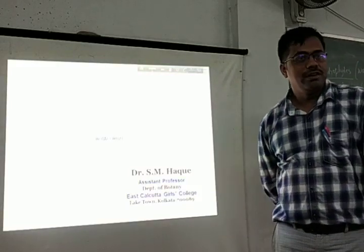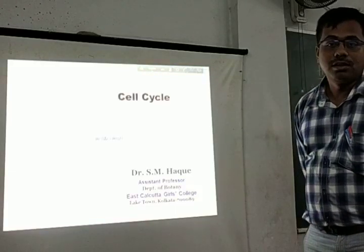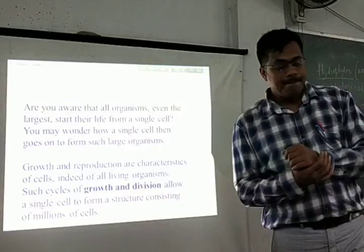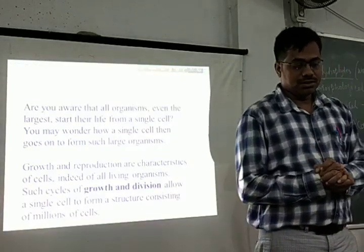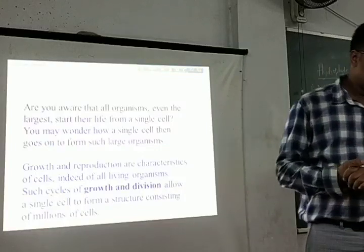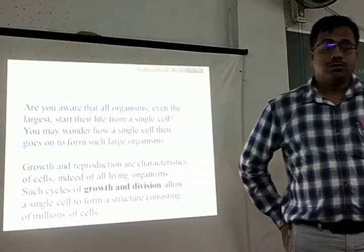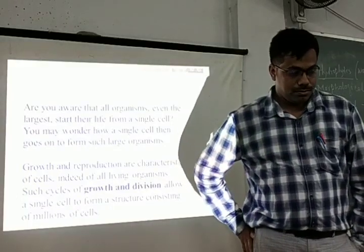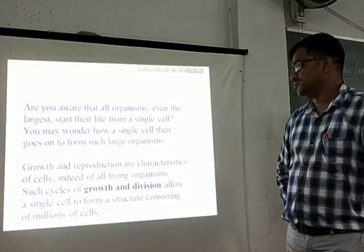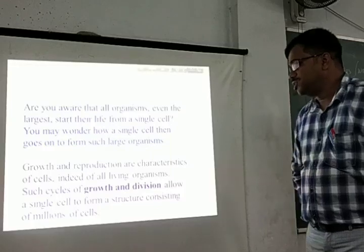Good morning to all. Today we are discussing about the cell cycle of eukaryotes. Are you aware that all organisms, even the largest — even an elephant or big banyan tree — starts their life from a single cell? You may wonder how a single cell then goes on to form such a large organism. Growth and reproduction are characteristics of cells, indeed of all living organisms. Such cycles of growth and division allow a single cell to form a structure consisting of millions of cells.